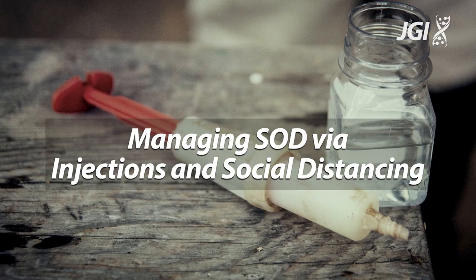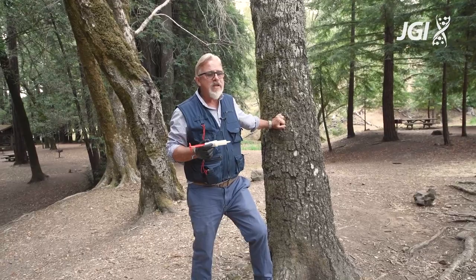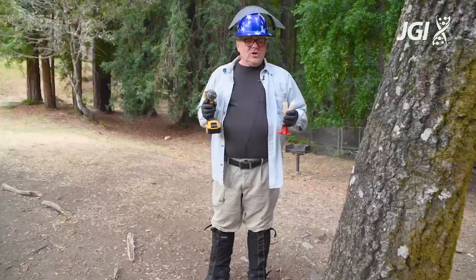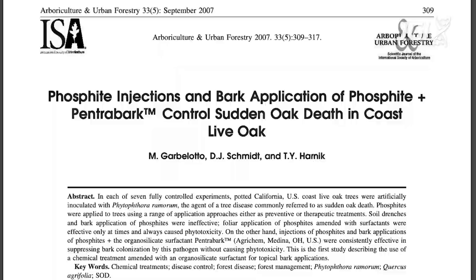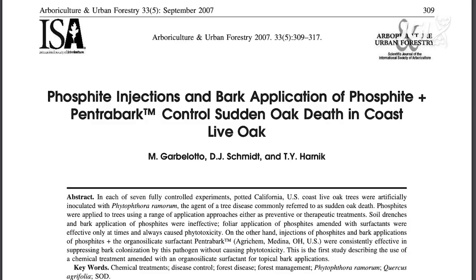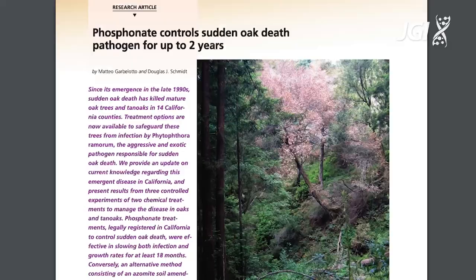The sudden oak death pathogen is exotic to California, and for that reason, trees like the oak behind me have never developed any kind of resistance against it due to the lack of co-evolution. One of the things we can do through injections is actually boost the immune system and make these oaks more resistant. We're injecting oak trees as a preventative measure using a phosphorus compound called phosphite or phosphonate, which is injected into the tree and aids it in fighting the infection.